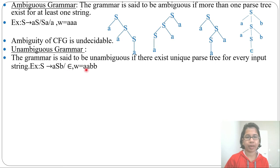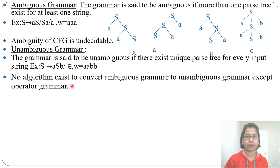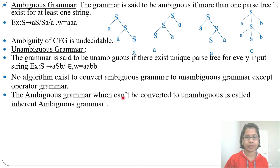I will explain in detail about ambiguous and unambiguous grammar in compiler design. No algorithm exists to convert ambiguous grammar to unambiguous grammar, except operator grammar. Operator grammar is the only grammar that you can convert to unambiguous grammar by redefining it. That I will explain in compiler design — how to convert operator ambiguous grammar to unambiguous grammar.